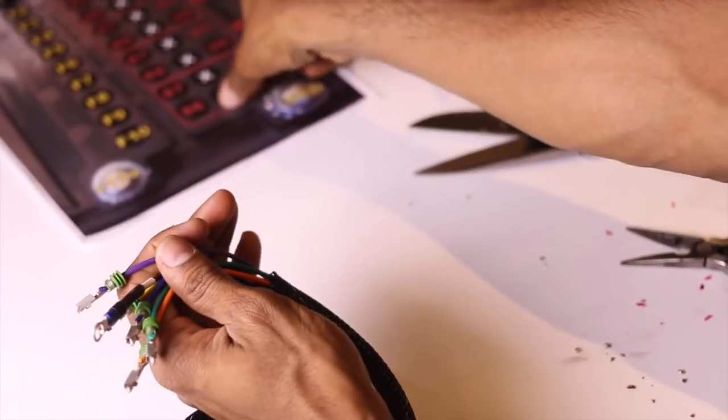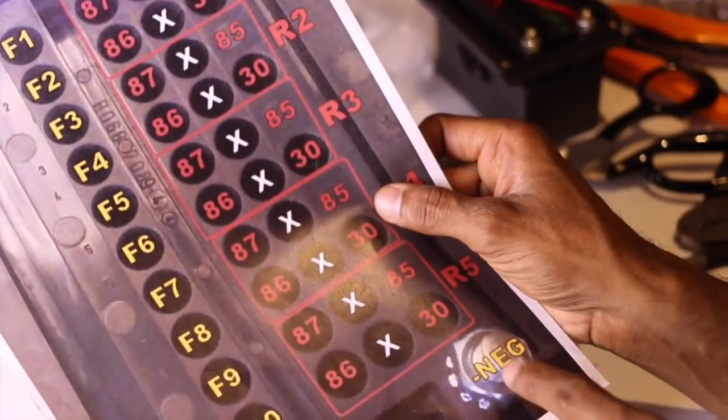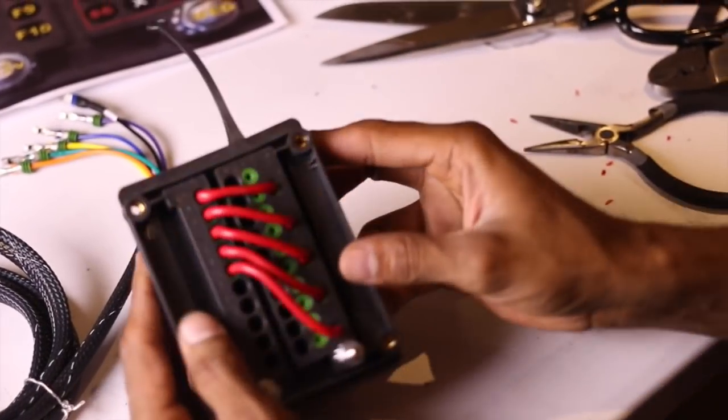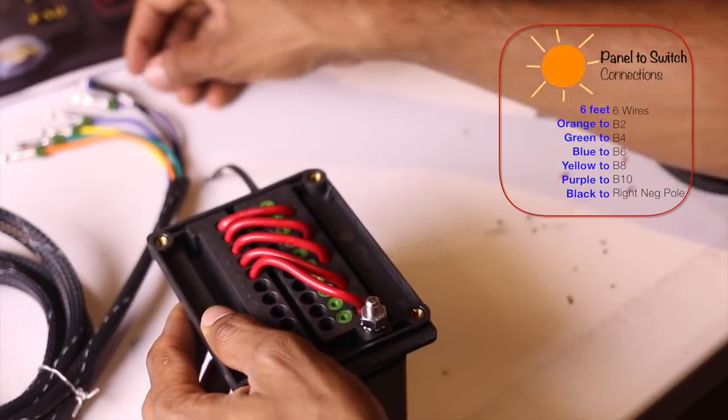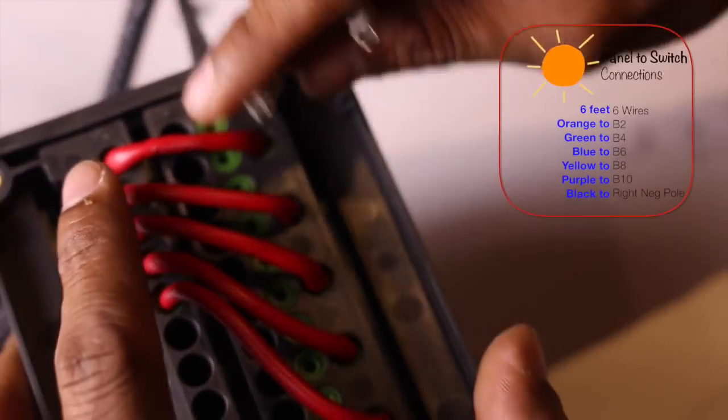Once you have all these parts ready we're going to start installing them into the relay panel on 86 which is for connection between the relay panel to the switches. Once you have relay panel ready you start inserting into not the first hole, the second hole which is the b2 then b4.